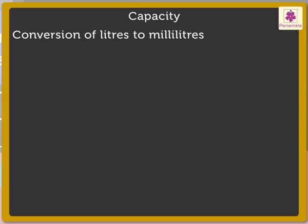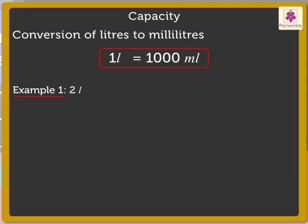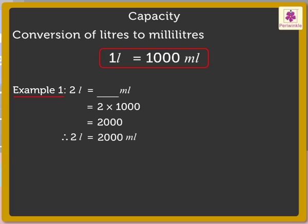To change liters to milliliters, we multiply liters by 1000. Let's see how. Let's convert 2 liters into milliliters. So here, 2 into 1000 is equal to 2000 milliliters. Thus, we get 2 liters is equal to 2000 milliliters.